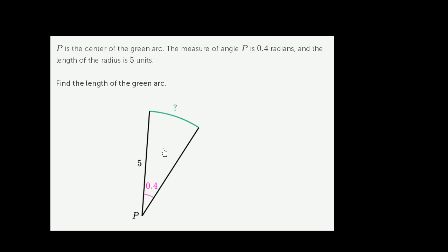P is the center of the green arc. This is P right over here. The measure of angle P is 0.4 radians, and the length of the radius is 5 units. That's this length right over here. Find the length of the green arc.